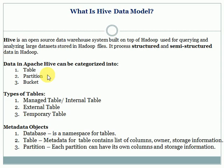As you know, Hive is a data warehouse software where we can store structured and semi-structured data. Hive does not support unstructured data — only structured and semi-structured data. Structured data means data with rows and columns; semi-structured means files like XML or JSON files.